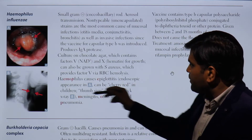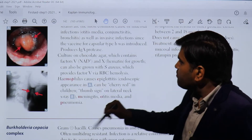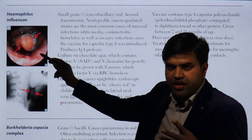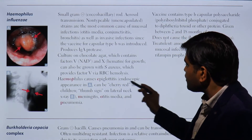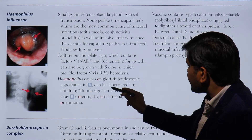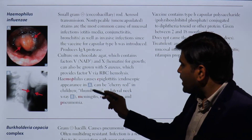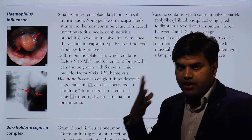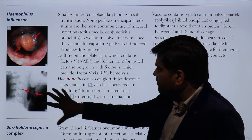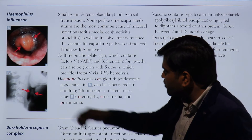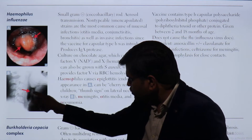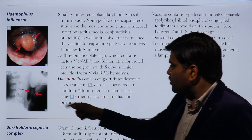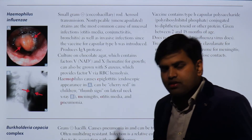Haemophilus influenzae causes epiglottitis. On endoscopy, you can see the cherry red appearance of the epiglottis. In children, there is also the thumb sign on the lateral neck X-ray — when you take a lateral view X-ray of the neck, this swollen part appears like a thumb.